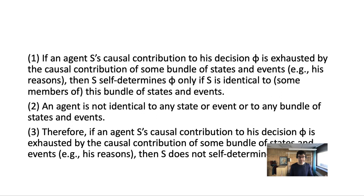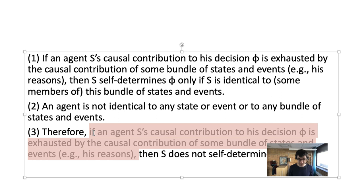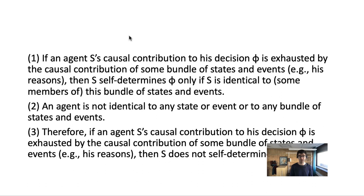This would be a problem for Franklin's minimal event causal libertarianism, because it accepts agency reductionism. It would follow that according to Franklin's theory, agents cannot determine themselves — and it's natural to think that if agents cannot determine themselves, they don't have free will.